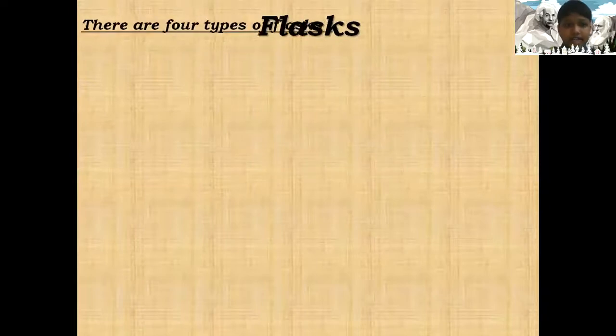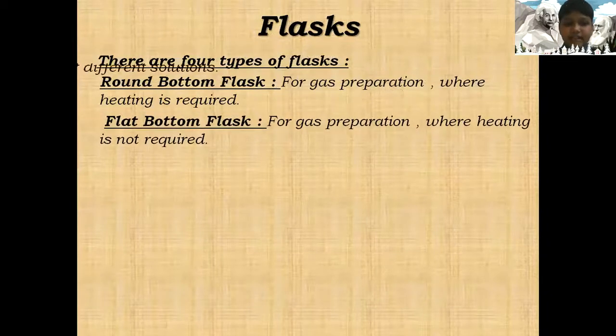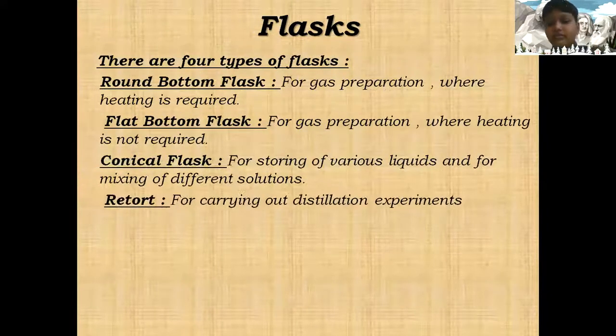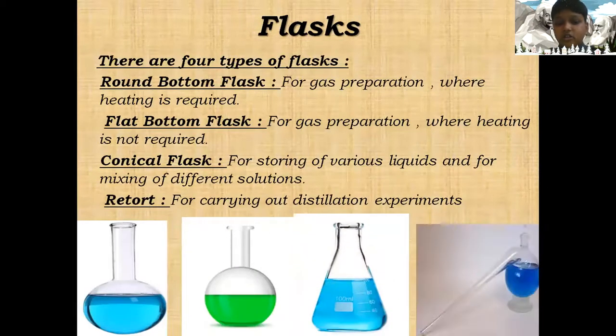Flasks: There are four different types. Round bottom flask for gas preparation where heating is required. Flat bottom flask for gas preparation where heating is not required. Conical flask for storing various liquids. Retort for carrying out distillation experiments.